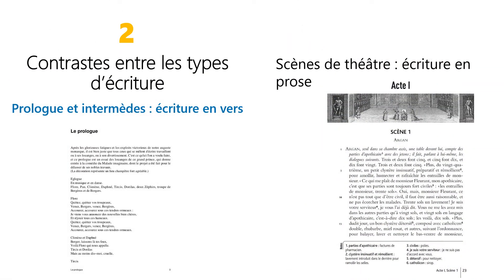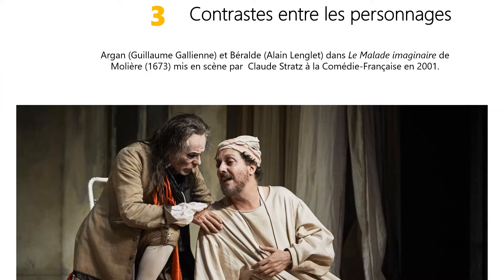Molière crée également des contrastes en variant les types d'écriture. En effet, le prologue et les intermèdes sont écrits en vers alors que les scènes de théâtre sont écrites en prose. Enfin, Molière joue sur les contrastes en créant des personnages opposés. Ainsi, les deux frères, Argan et Bérald, sont l'exact opposé l'un de l'autre. Bérald est l'antithèse absolue d'Argan.